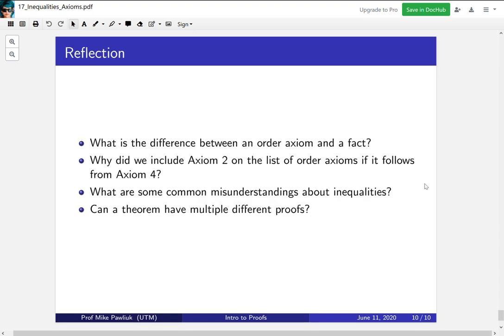Finally, let's take some time to reflect. What is the difference between an order axiom and a fact or a basic fact? Why did we include axiom 2 on the list of order axioms if we know that it follows from axiom 4? What are some common misunderstandings about inequalities? And finally, can a theorem have multiple different proofs? Thank you very much and have a good day.